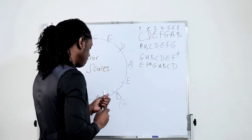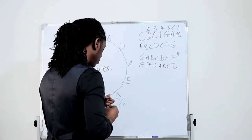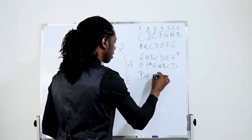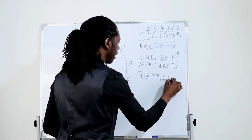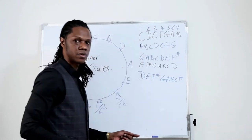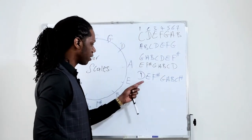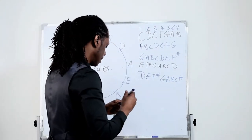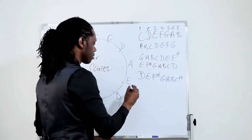How about D major? So you go to D major: D, E, F sharp, G, A, B, C sharp. You go to the sixth degree — one, two, three, four, five, six — and that is going to be your B natural minor.